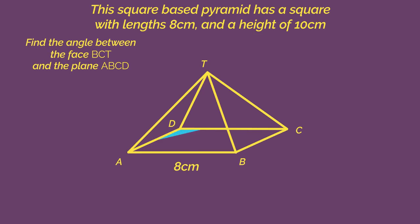As always, start by looking for right angle triangles. Right angles are only found between vertical and horizontal lines. So we need to drop a vertical from T down to the centre of the horizontal base.